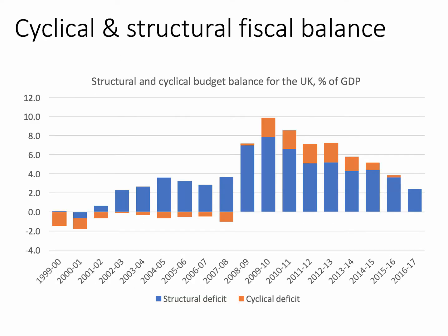How does this relate to actual figures for the UK? There is a chart showing the annual budget balance for the UK government measured as a percentage of GDP since 1999. In 1999–2000, the government was actually running a budget surplus, albeit a small one. But since 2001–2002, the government has been running a budget deficit in most years.